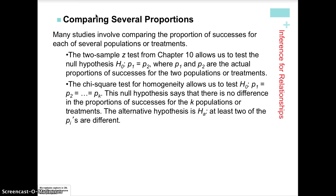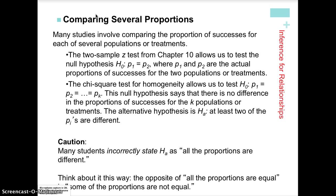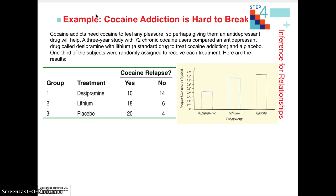The alternative hypothesis says at least one is different — really, at least two proportions are different. We need to be very careful the way we state the alternative hypothesis, because it doesn't mean that all proportions are different. It literally means at least two are different, and that's the way we need to be phrasing our alternative hypothesis.